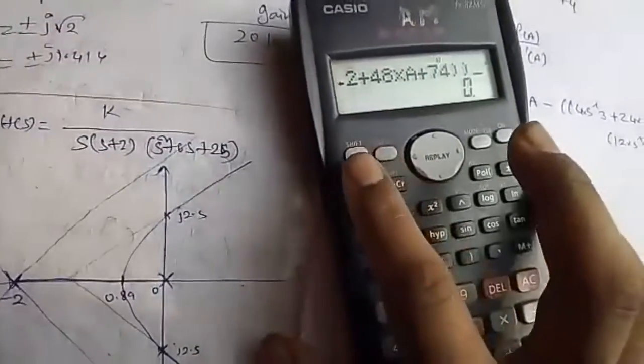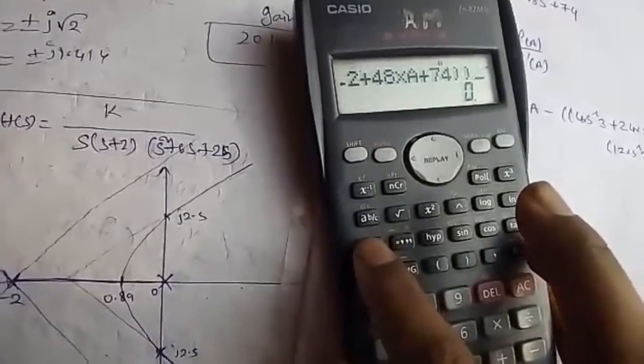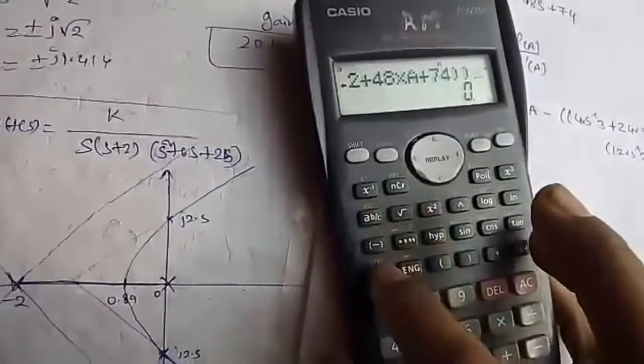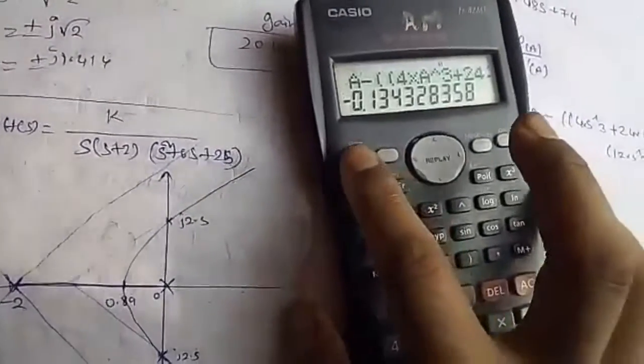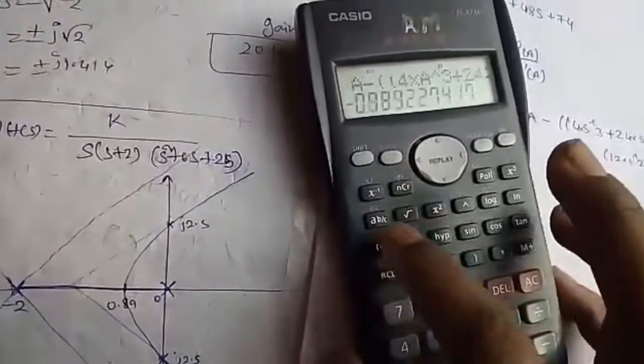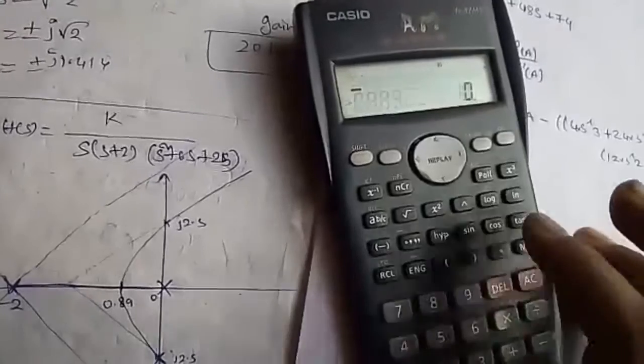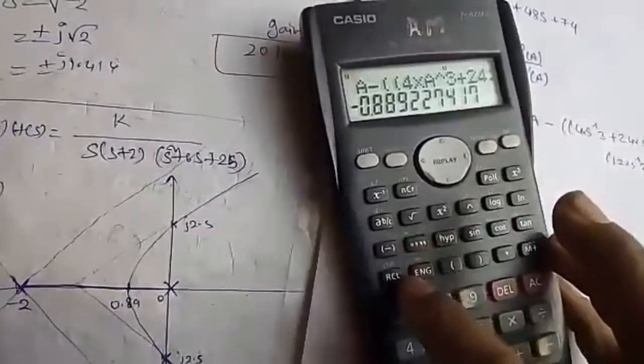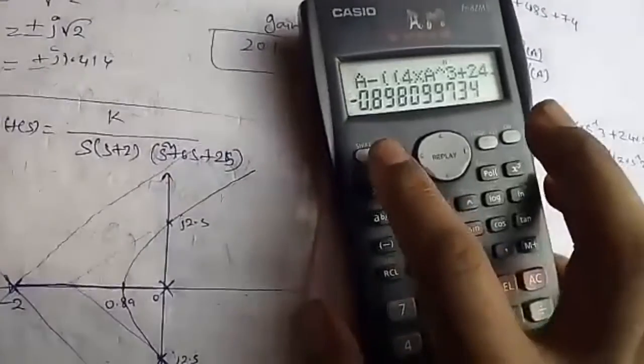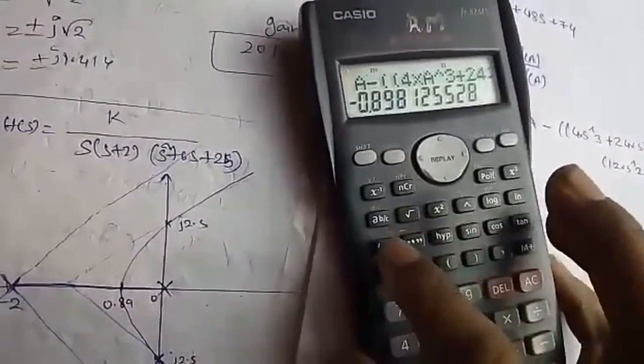Press Shift, RCL, equals. You can see the value is changing every time. Keep pressing Shift, RCL, equals repeatedly.